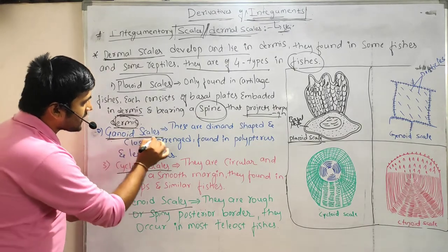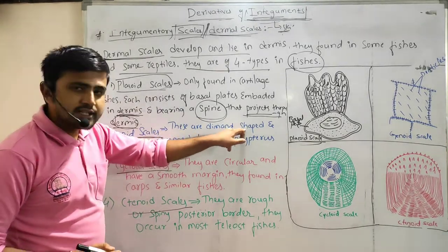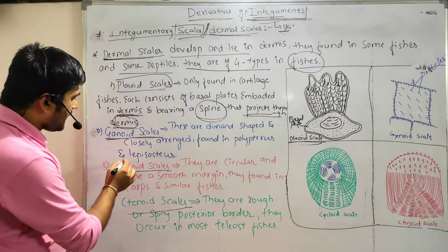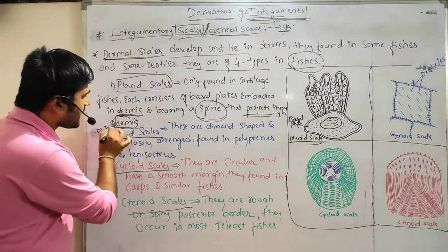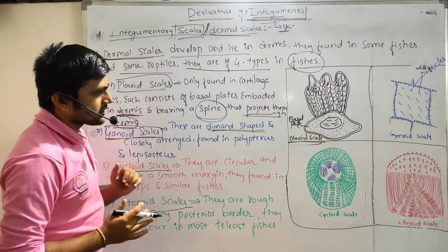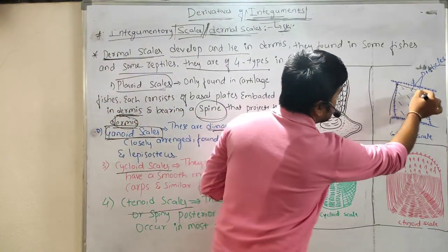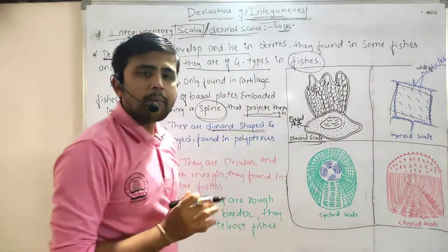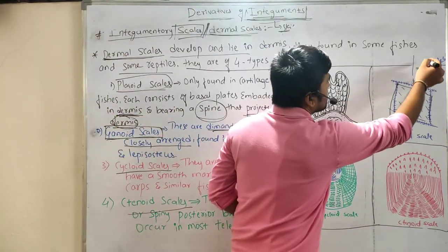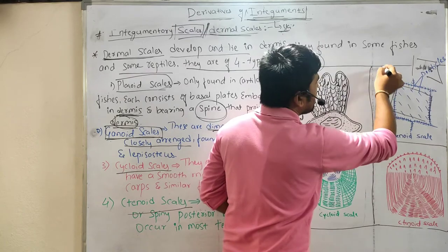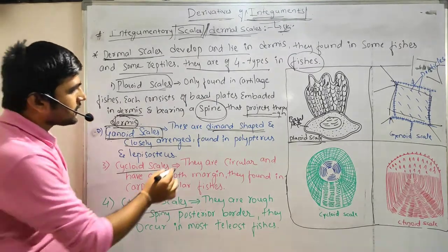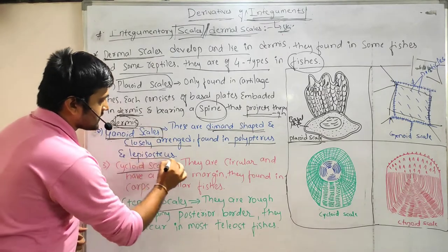The second type is ganoid scales. Ganoid scales are diamond-shaped and closely arranged. They are found in Polypterus and Lepisosteus. They have a diamond-shaped structure and are closely arranged — one diamond-shaped scale after another, arranged side by side.